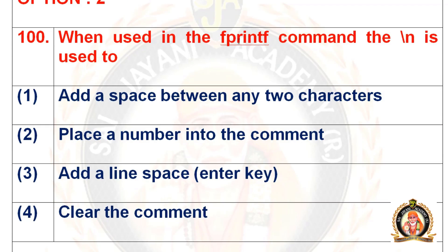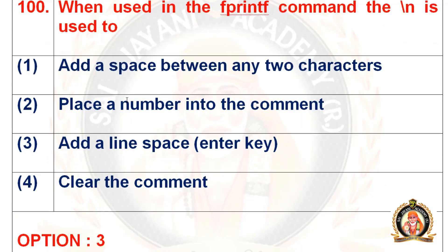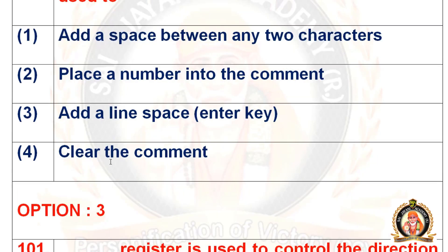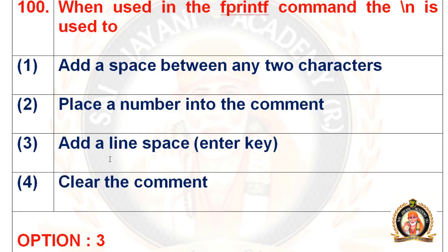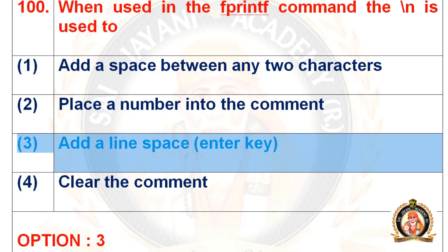Move on to the 100th question: in the fprintf command, \n is used for dash. The first option is add a space between any two characters, the second is place a number into the comment, the third is add a line space (enter key), and the fourth is clear the comment. The right option is option 3 — add a line space, that is, the enter key. For detailed solutions, visit our YouTube channel.